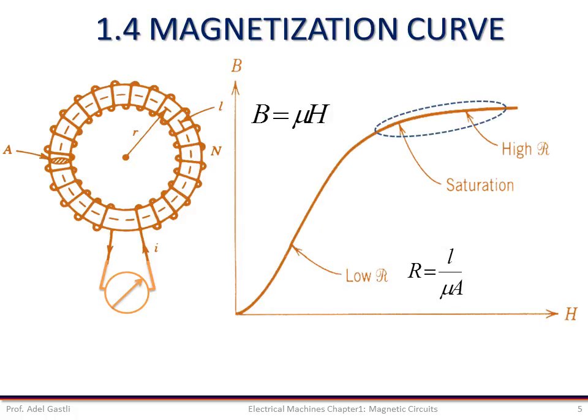However, at high values of H, the change of B is nonlinear, and the magnetic material shows the effect of saturation. The BH curve is also called the magnetization curve.